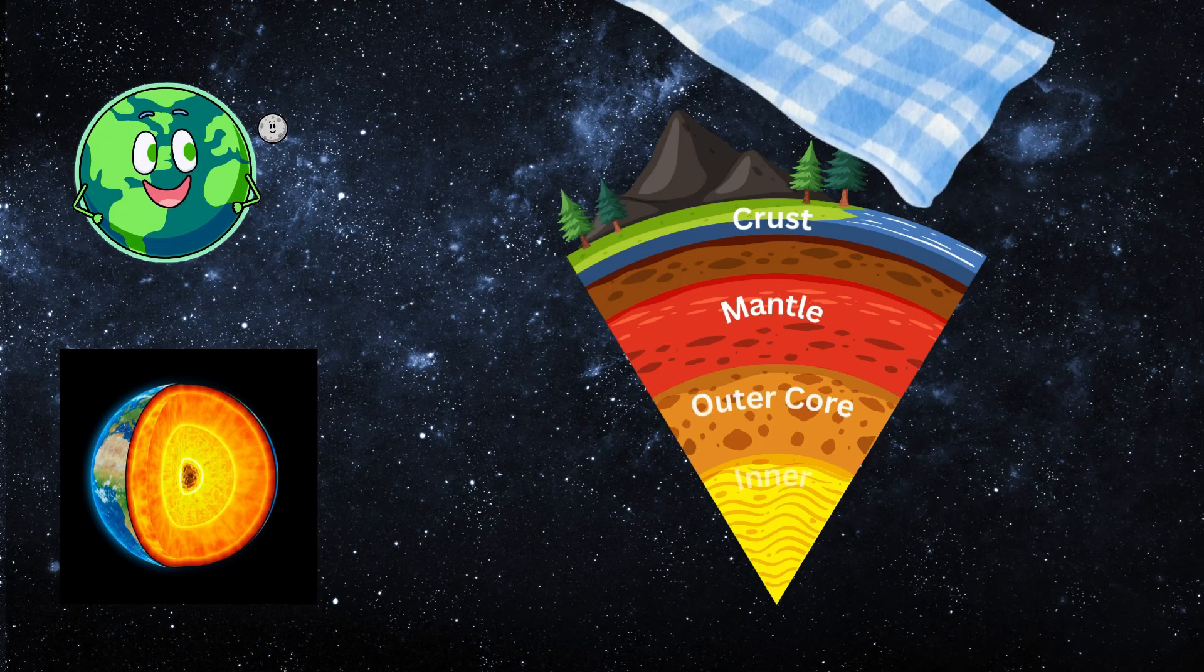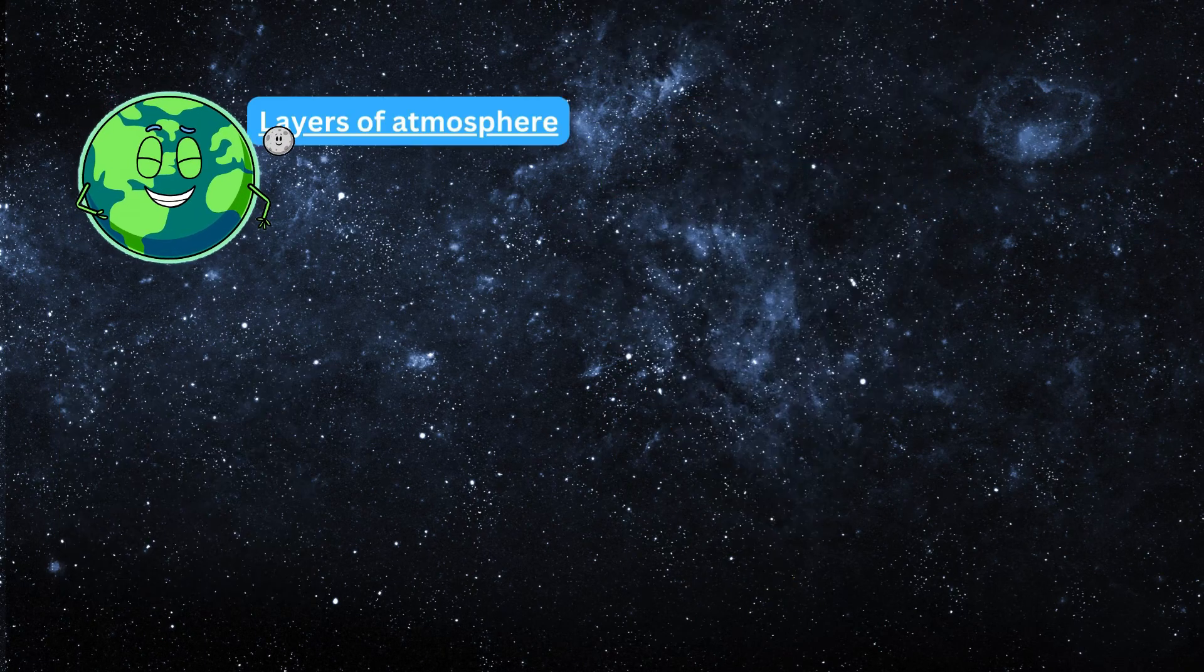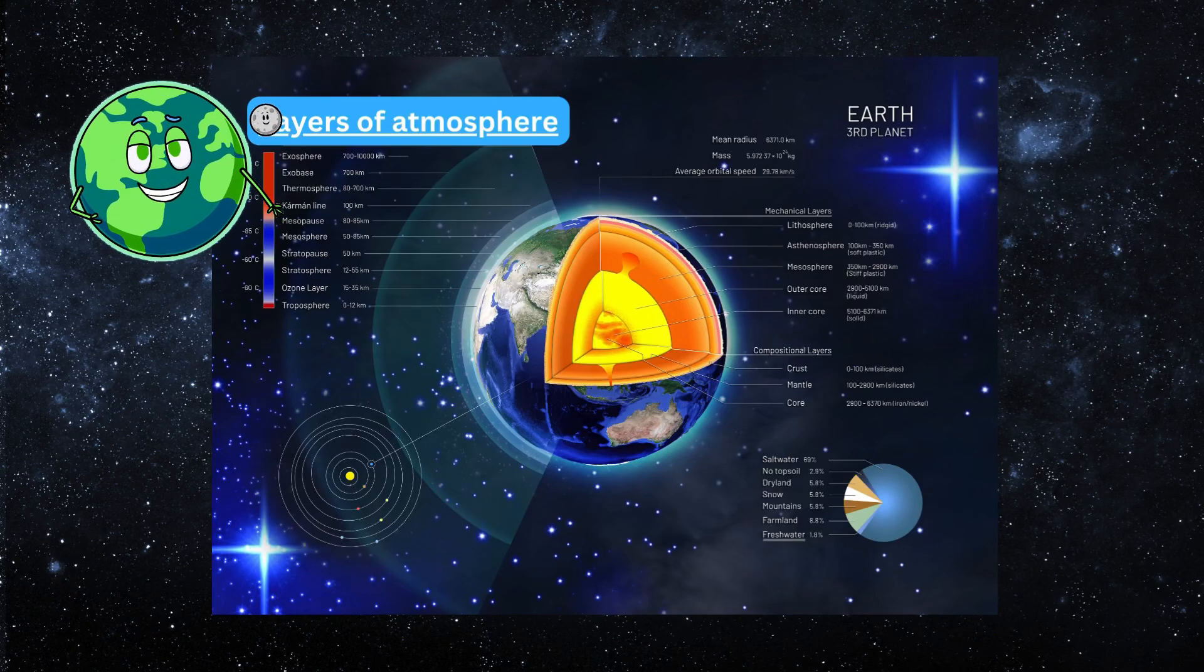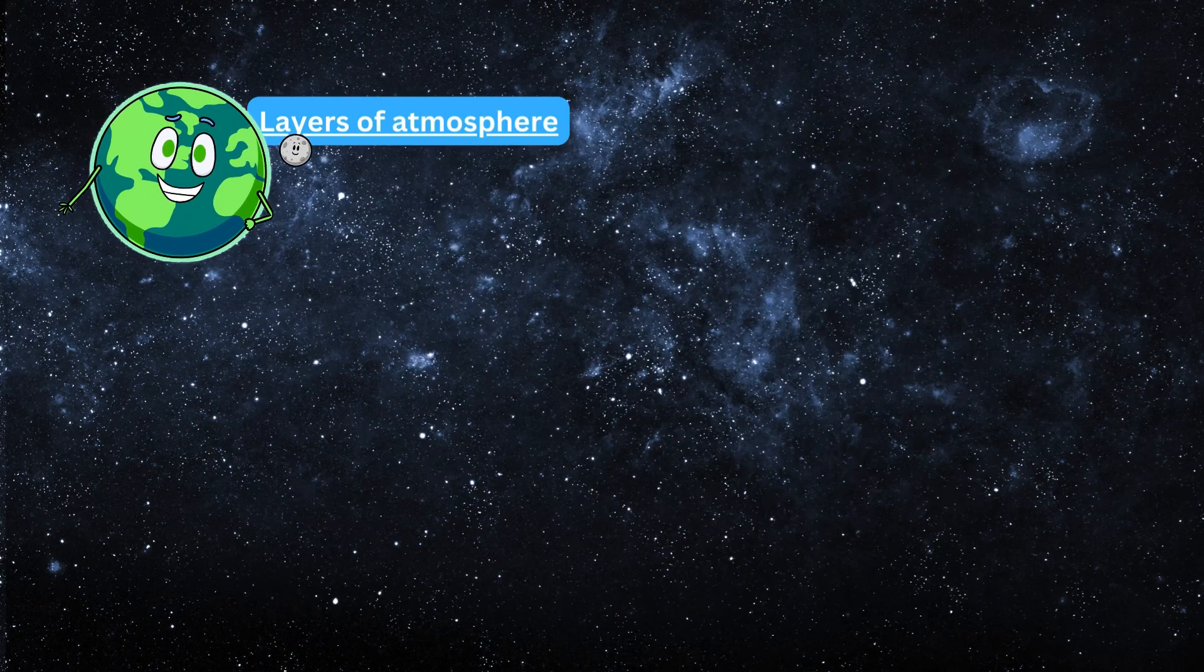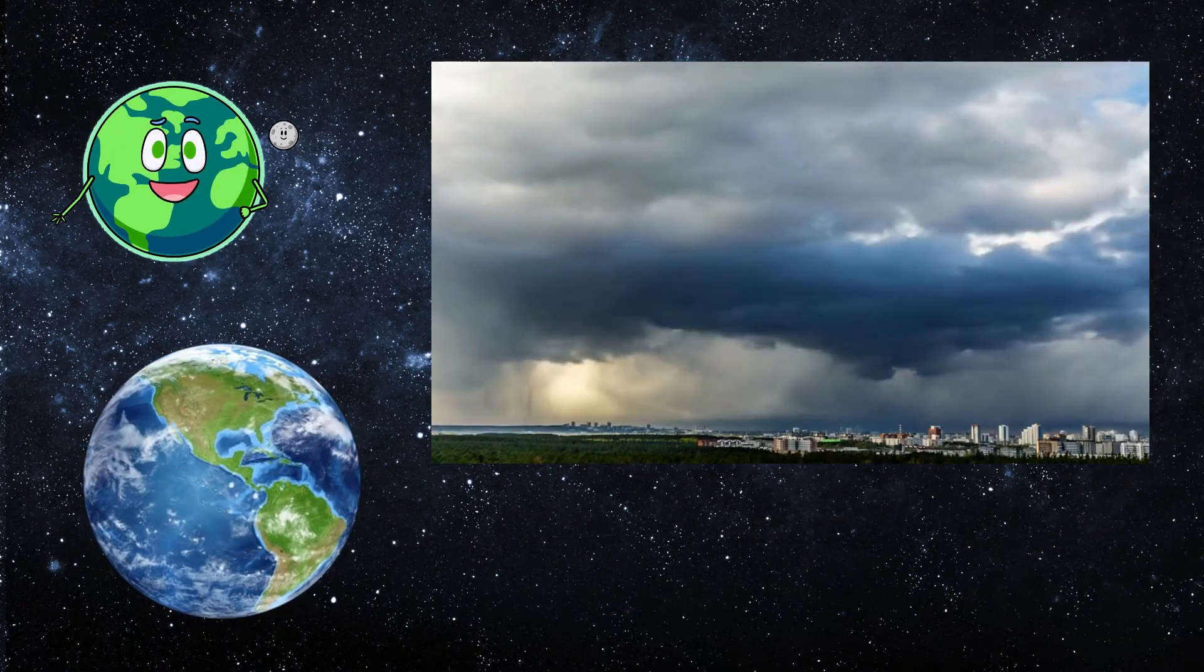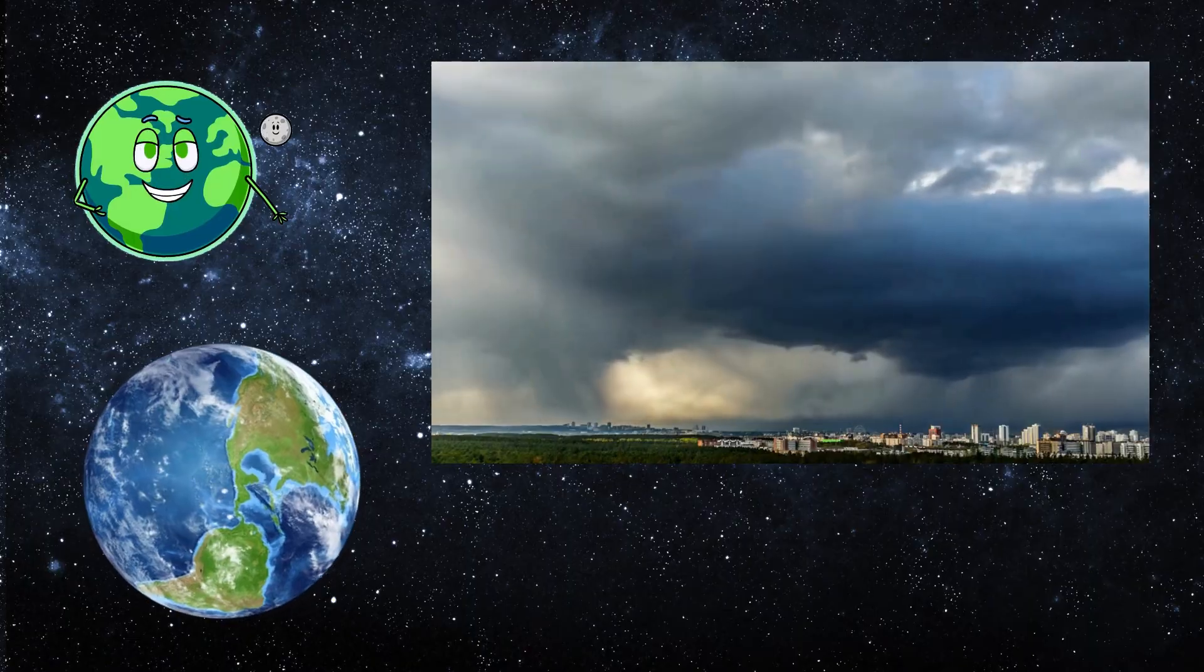Around Earth is a blanket of air called the atmosphere. It has oxygen for us to breathe and protects us from the sun's harmful rays. It's also where weather happens. From sunny days to rainy clouds, it all happens in the atmosphere.